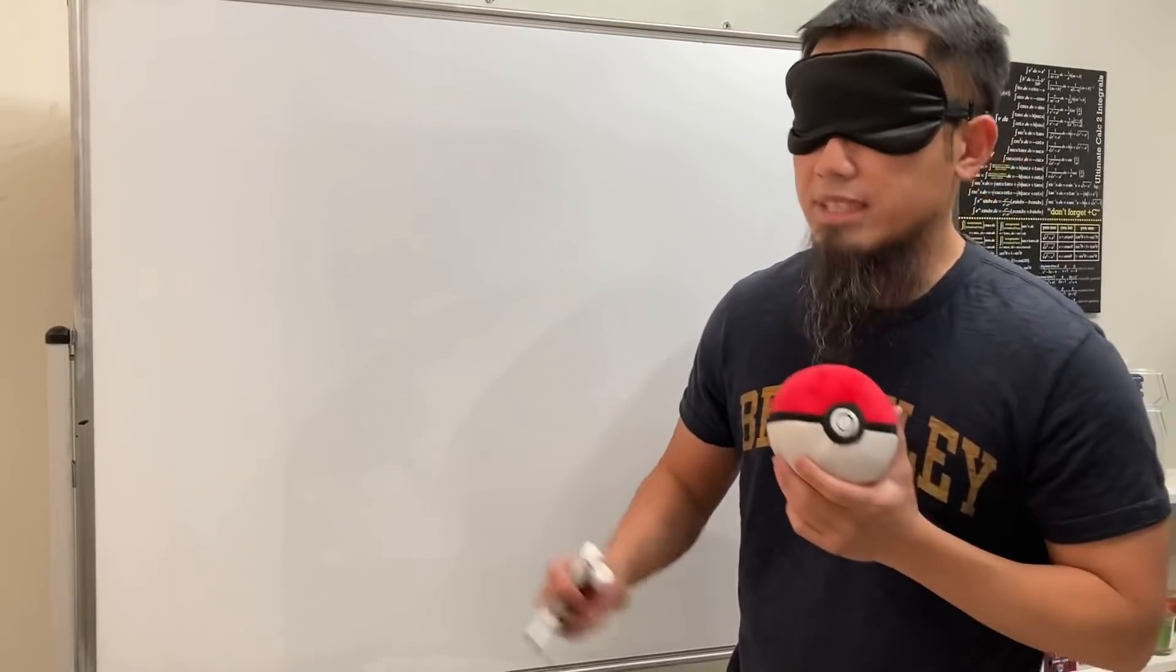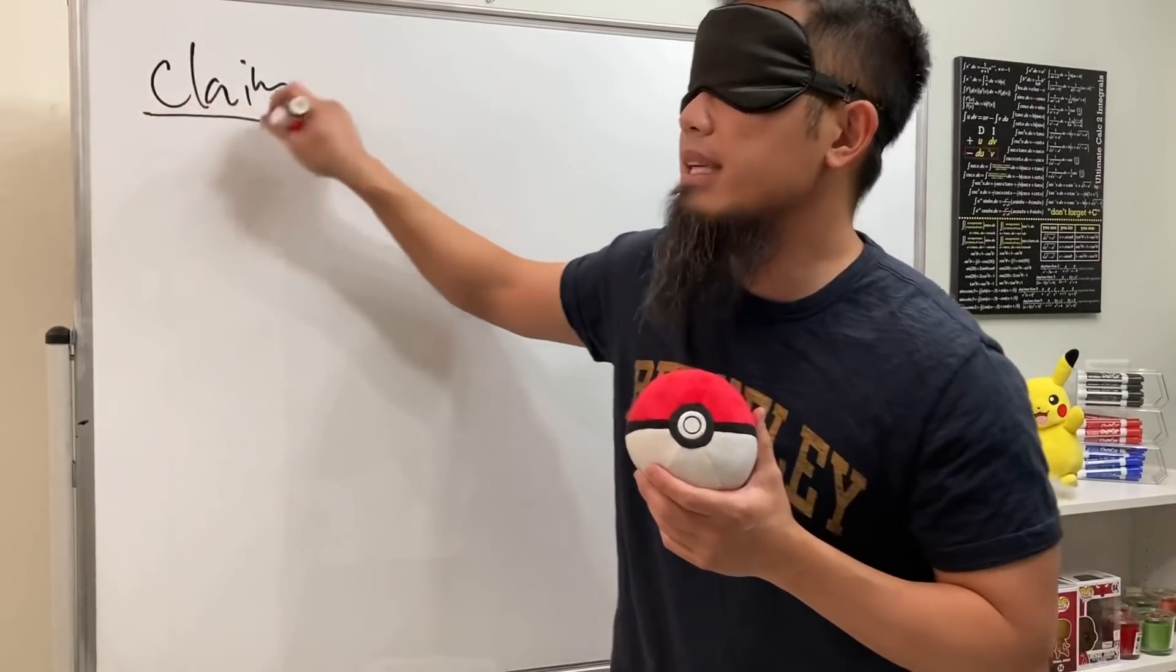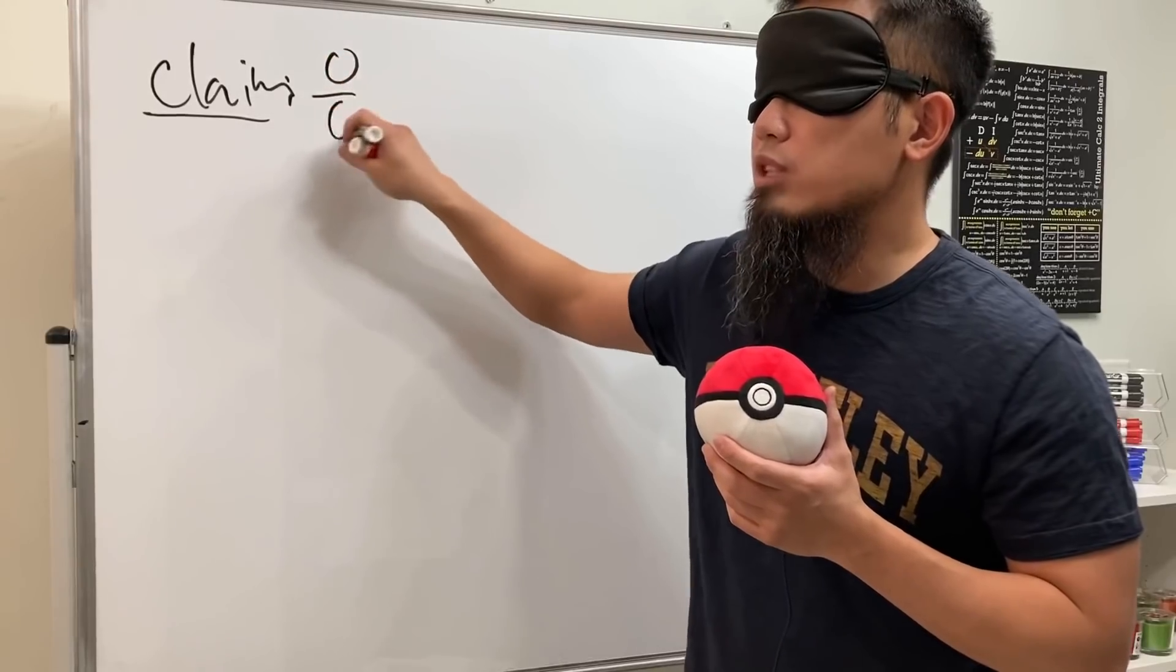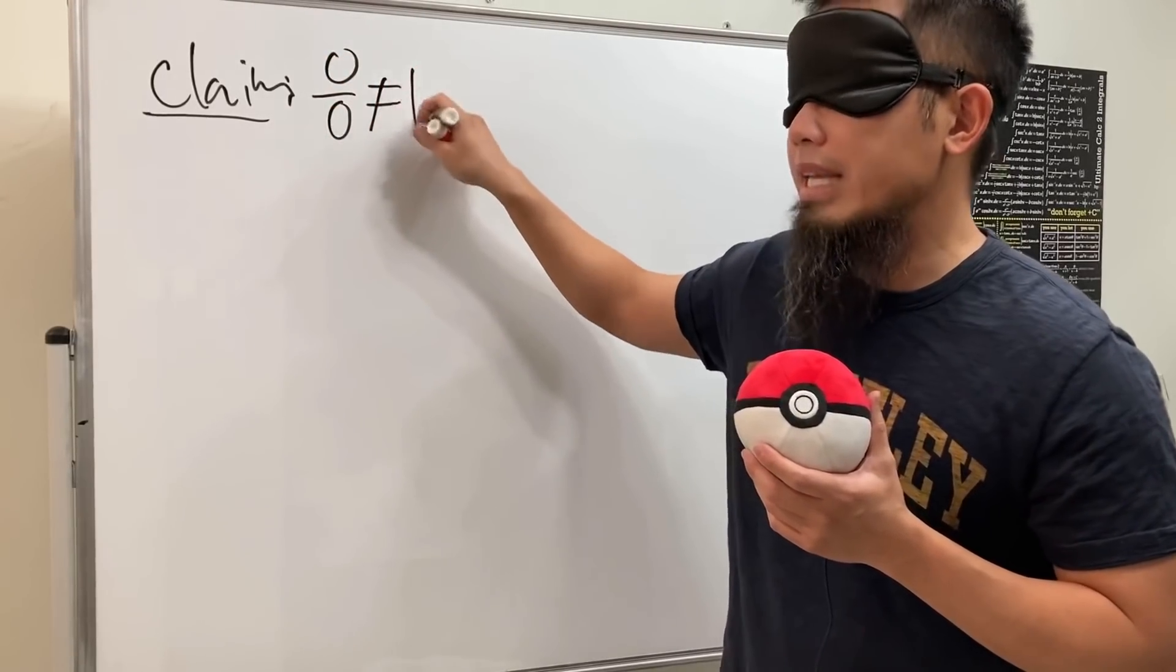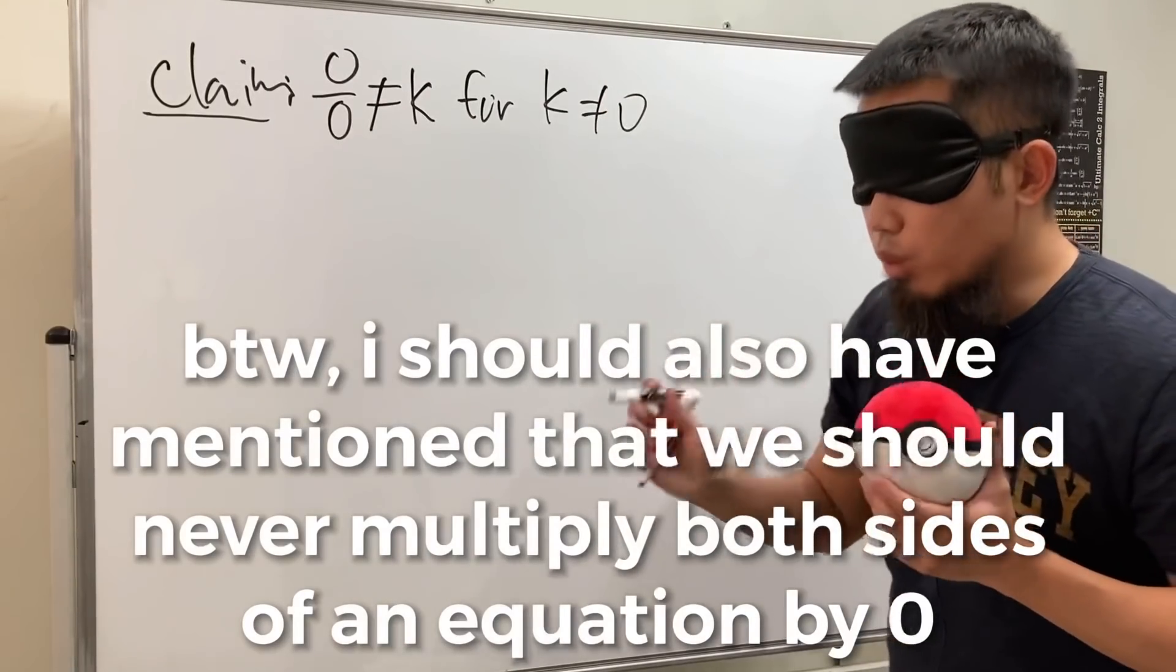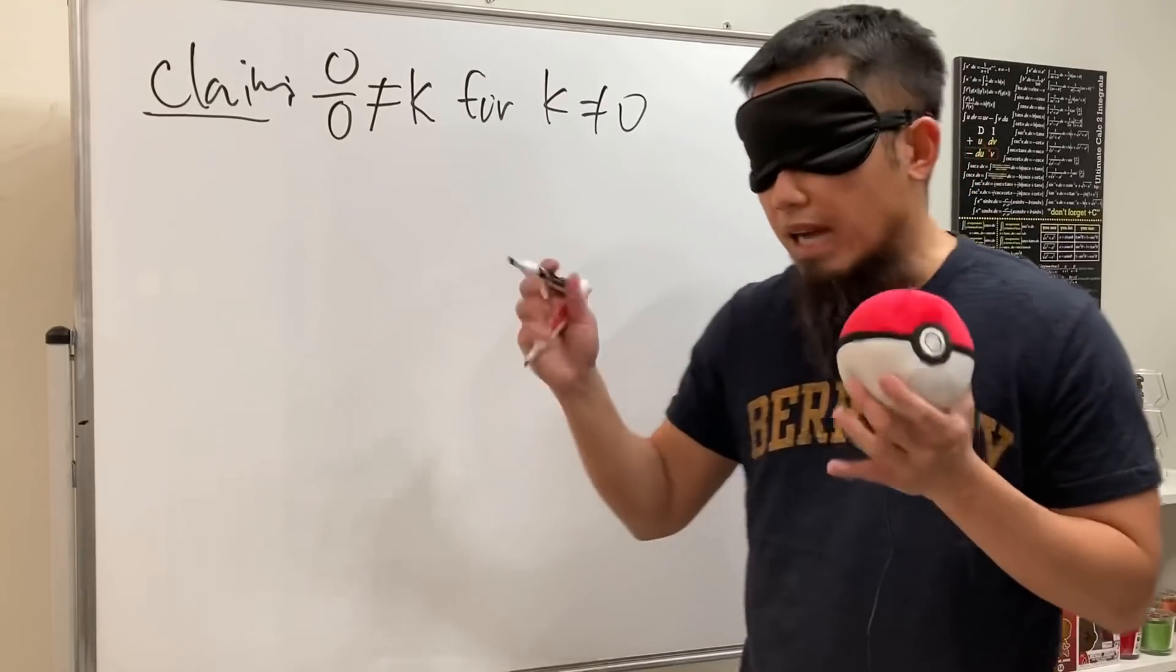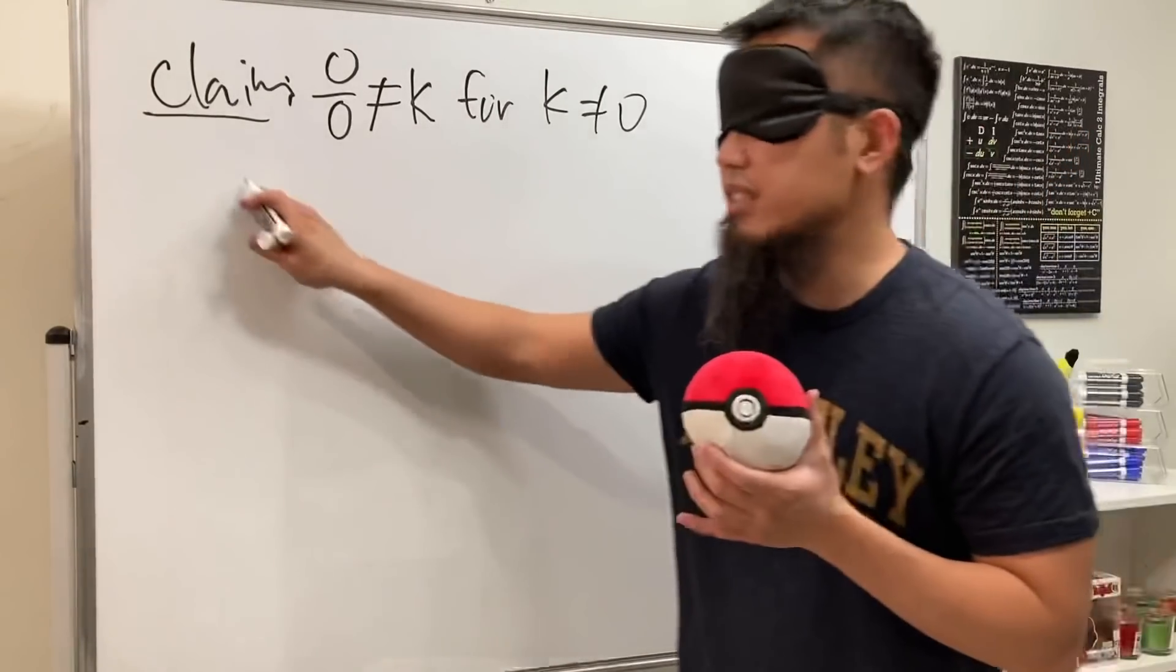Okay, in this video let's talk about zero over zero. Let me write this down right here for you guys. This right here is my claim: zero over zero cannot be equal to k for non-zero k. In another word, if you ever want to define zero over zero, then I think the only answer should be zero because otherwise this kind of things will happen. Check this out.